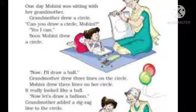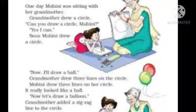Today we will do our Marigold book, unit 5th, chapter 2. So, what's the name of the chapter? Circle. हमारे chapter का नाम है Circle. Listen, read and draw. आपको ये carefully listen करना, read करना और draw करना. So, let's start.